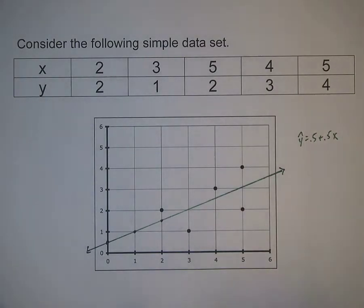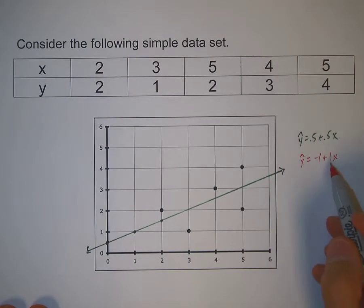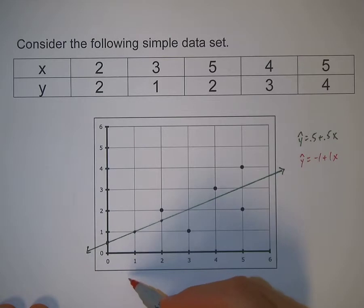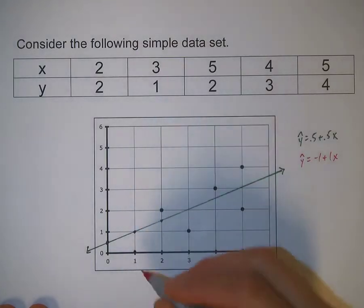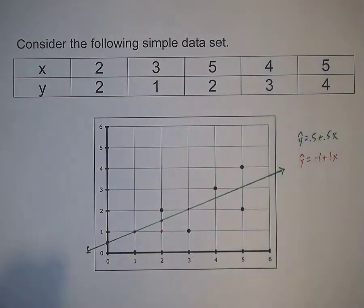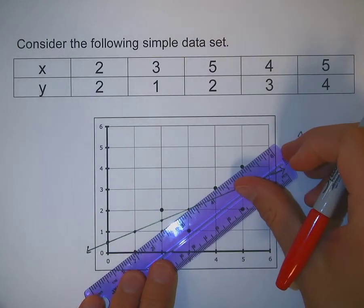The second one is y-hat equals negative 1 plus 1x. The y-intercept is negative 1, and the slope is 1. So the y-intercept would be here. With a slope of 1, we go over 1 and up 1. A change in x is 1, a change in y is 1. So we'd have a point here. Another point, over 1, up 1. Over 1, up 1. So we get a line that looks like this. I'll connect the points with the ruler.